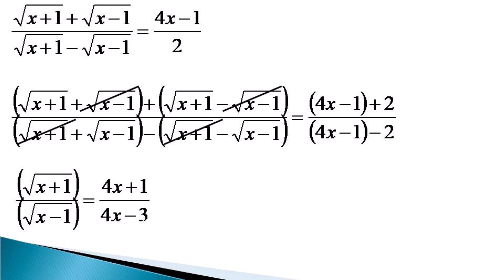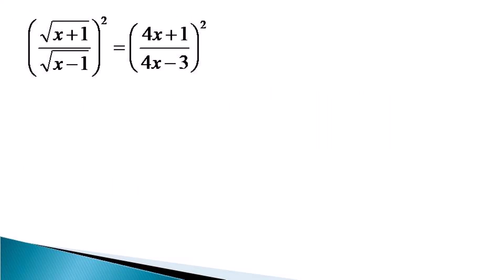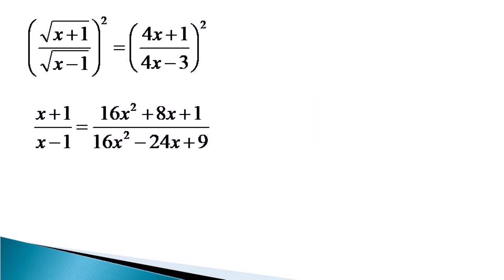This equation can have its surds removed by just squaring both sides. Squaring both sides, the equation becomes (x+1)/(x−1) equal to (16x² + 8x + 1) divided by (16x² − 24x + 9).